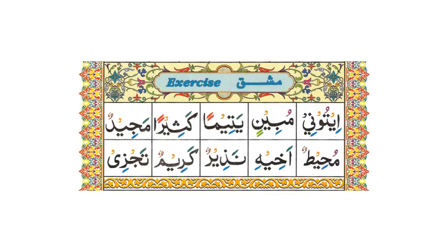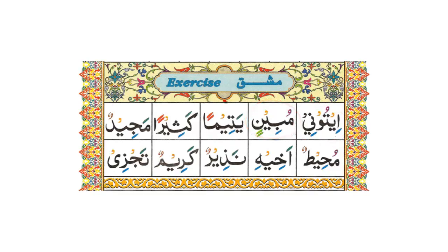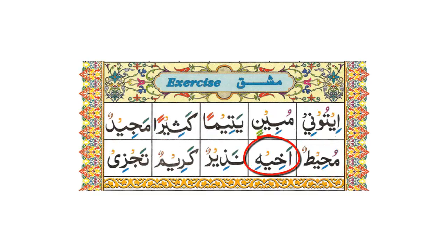Ii, tu, ni — okay — ii, tu, ni. Mubini, yetiman, kathir. Majidun, muheetun. Akhihi. Nadheerun. Kareemun.